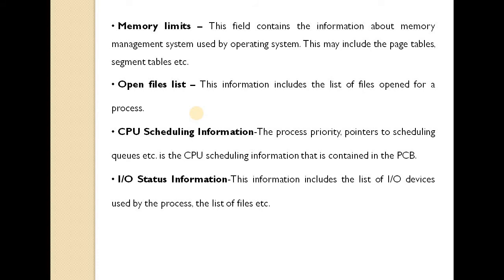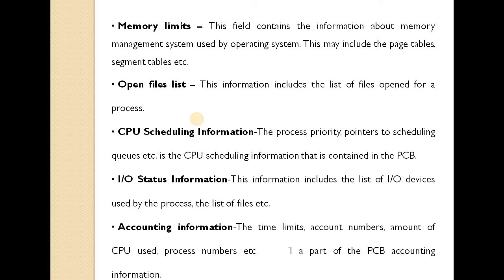The next field is input-output status information. This includes the list of I/O devices used by the process and the list of files being used by that process. The last field is accounting information: time limits, account numbers, amount of CPU used, process numbers, etc. So all these are the different parts of the process control block.